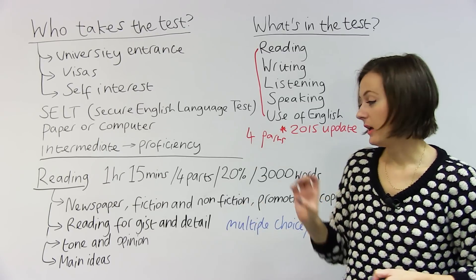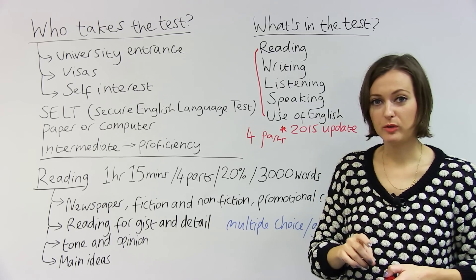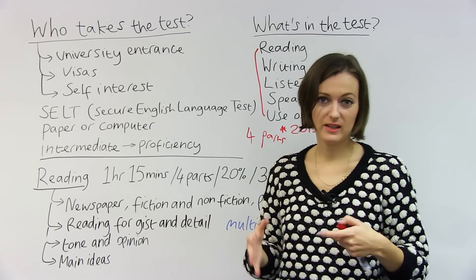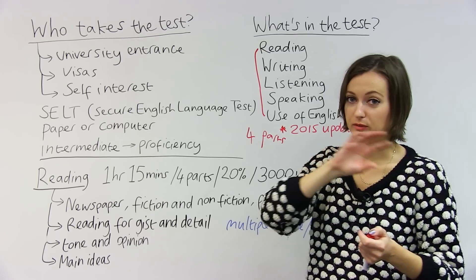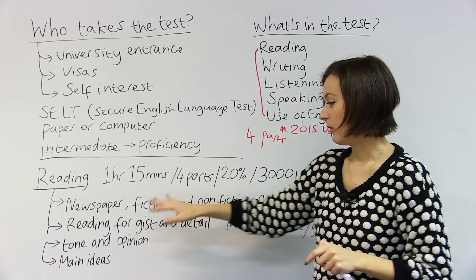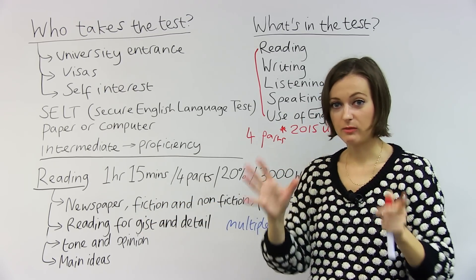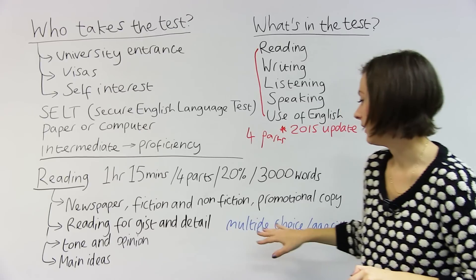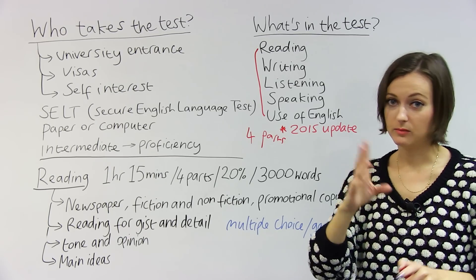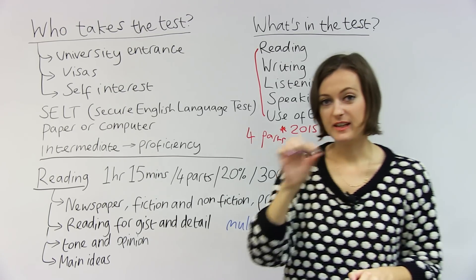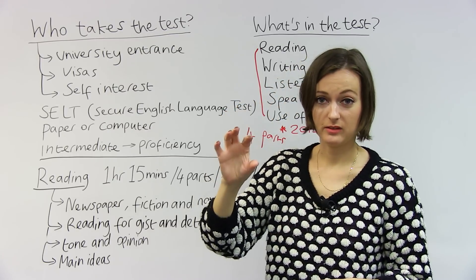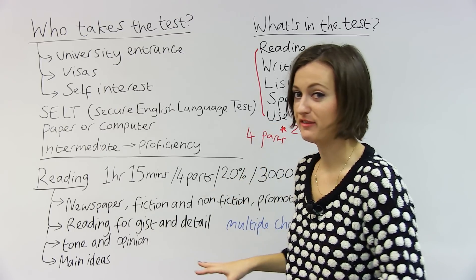The skills that it's looking for is your ability to read for gist, which is like the general meaning, but also detail. These are different reading skills. When you're reading for detail, you'll have to find a specific part of the text and read very closely for your answer, whereas gist relates to the general meaning. And when you're answering the question, sometimes it will be multiple choice, and sometimes you'll need to fill in a gap. So you need to go back to the text, read closely and find your answer so you can fill in the gap.